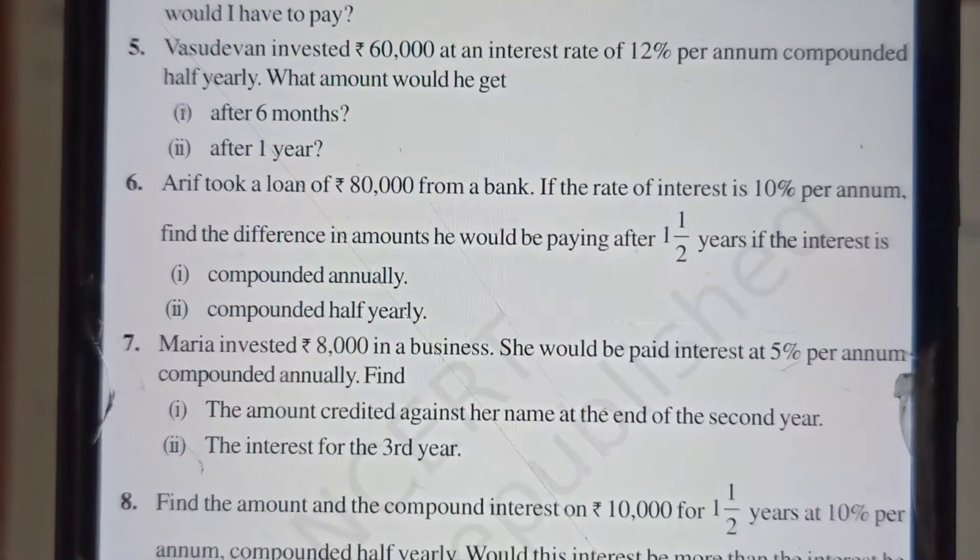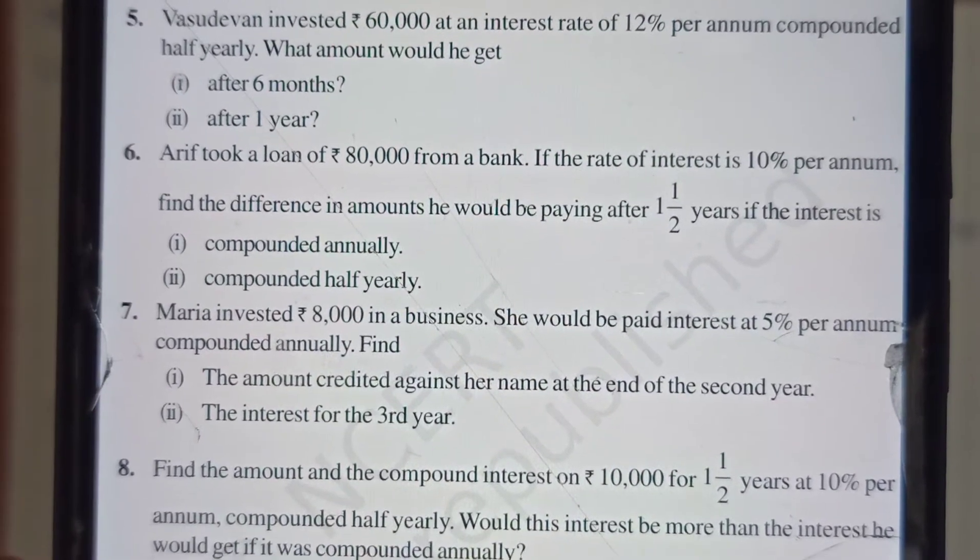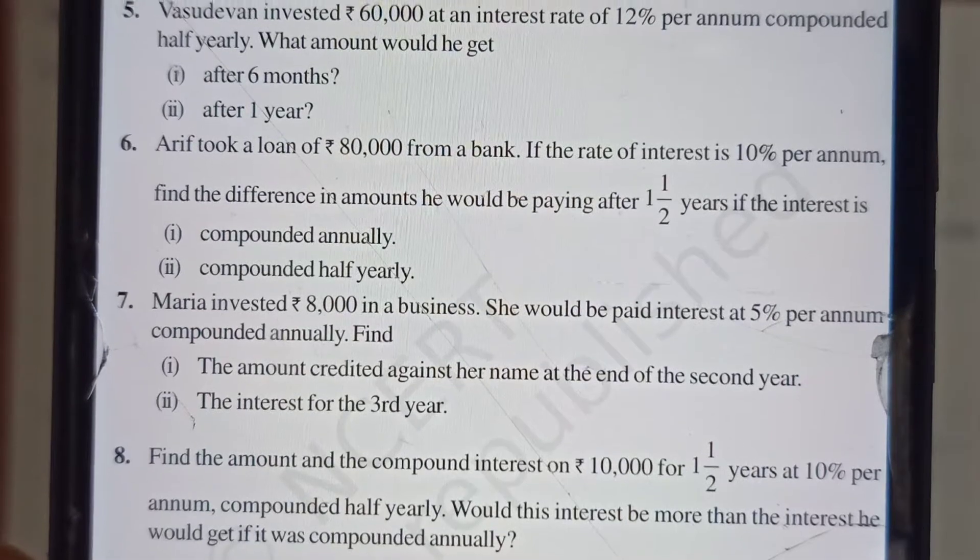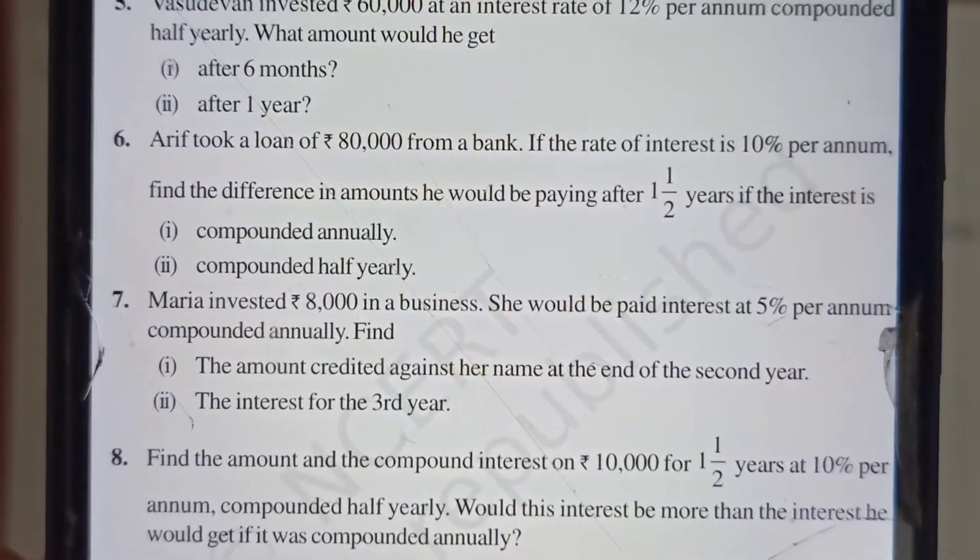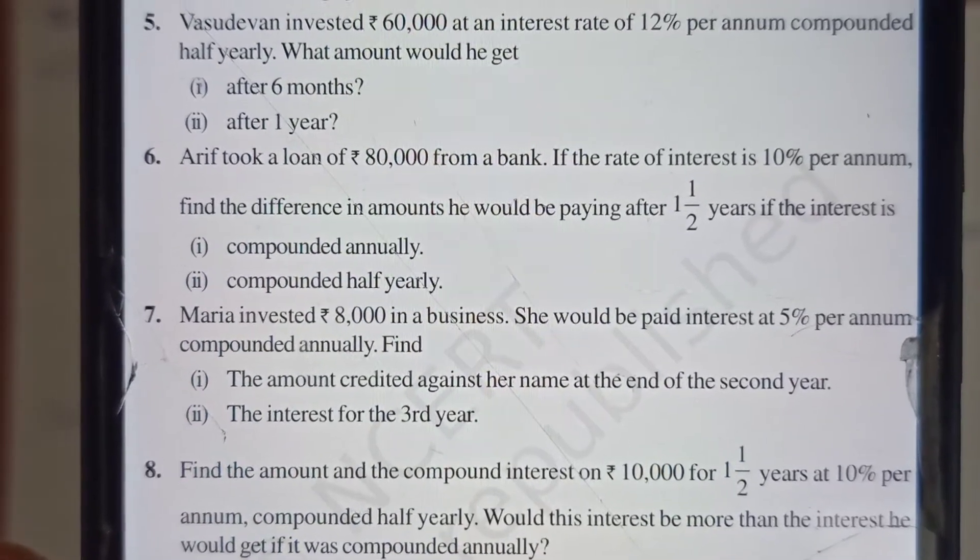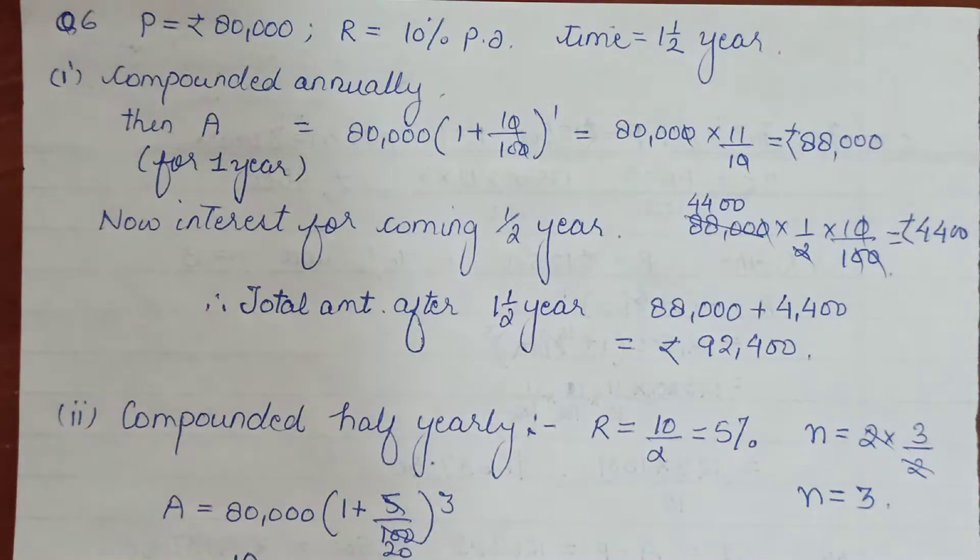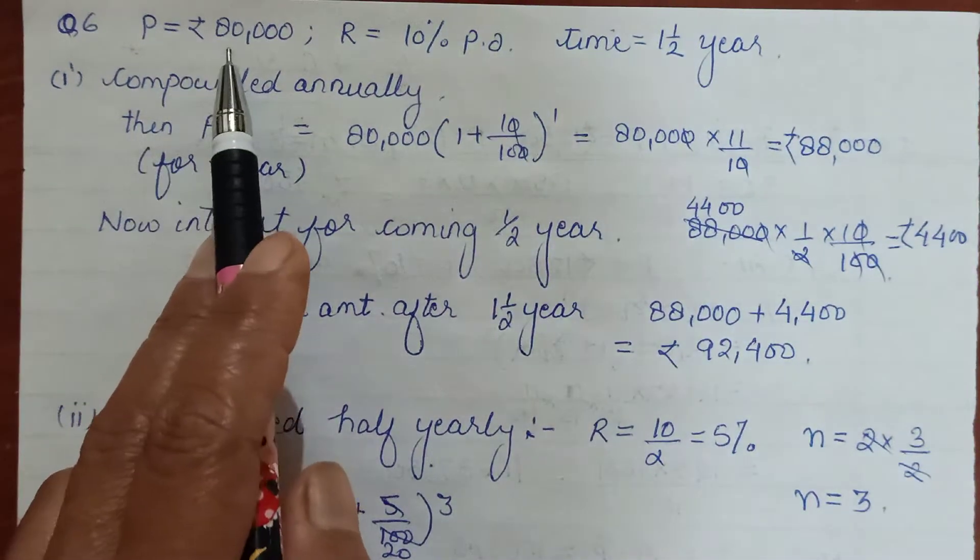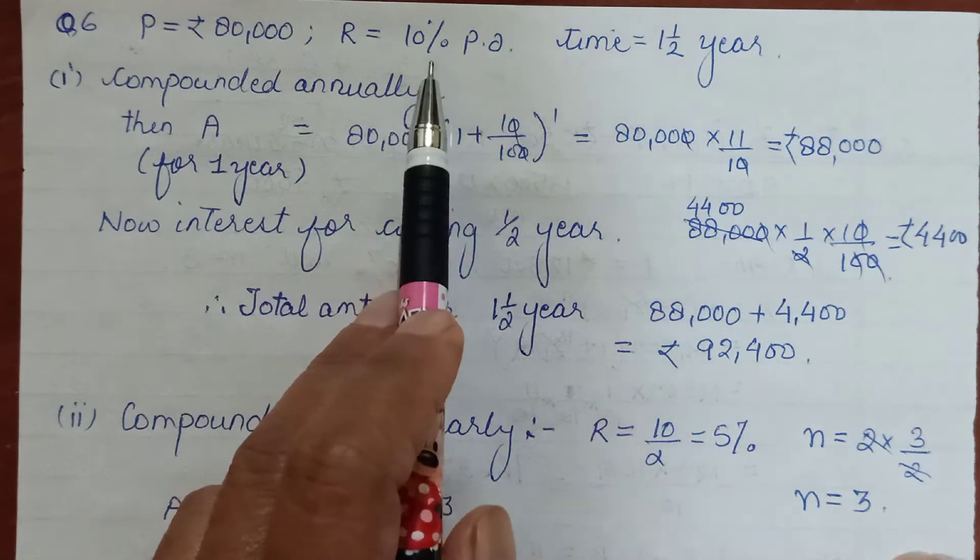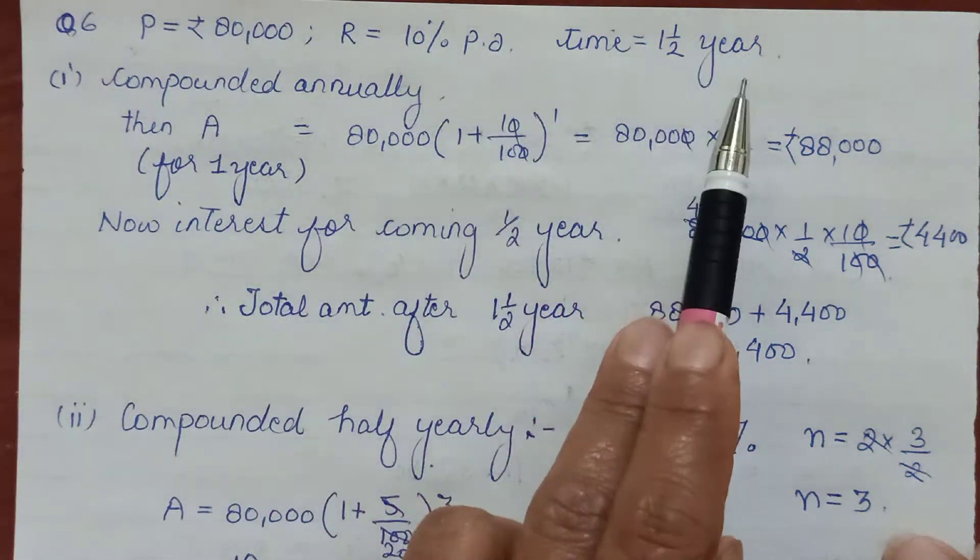Let's continue with the discussion of this exercise. Question 6: Arun took a loan of ₹80,000 from a bank. If the rate of interest was 10% per annum, find the difference in the amount he would be paying after one and a half years if the interest is compounded annually or compounded half-yearly. The principle will remain ₹80,000 in both cases, rate is 10% per annum, and time is one and a half years.